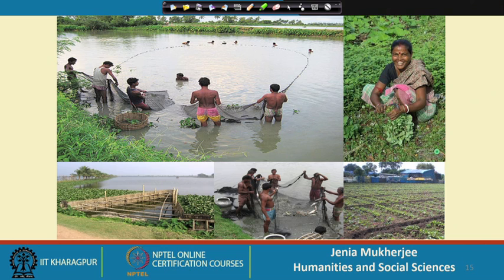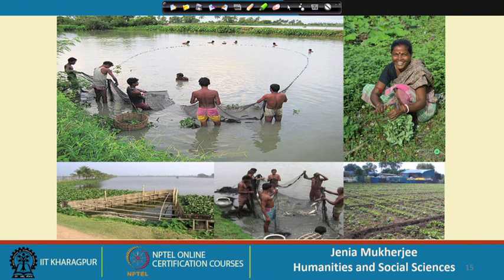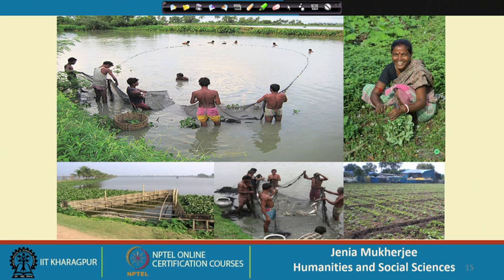These inhabitants practice pisciculture using raw or waste water or effluent. It is a total win-win situation because it provides livelihoods to more than 1.5 lakh people in this area. On the other hand, it generates ecosystem services, and Calcutta can buy fish at a very cheap and affordable price because the distance between Kolkata and the East Kolkata wetlands is very small.